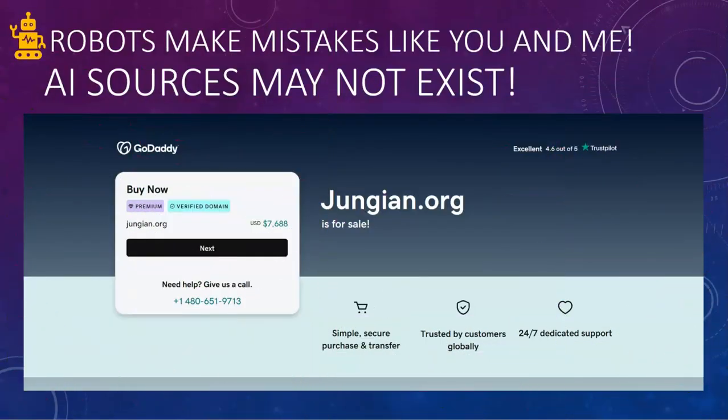Uh-oh. Robots, like you and me, make mistakes too. When I checked out one of the sources the AI provided in response to that prompt, it happened to be Jungian.org — which happens to be for sale and doesn't exist. AI has so much content fed into it from the internet that sometimes it garbles ideas, mixing up names of authors, books, or articles. So do make sure that you check to verify the information it's providing is accurate.